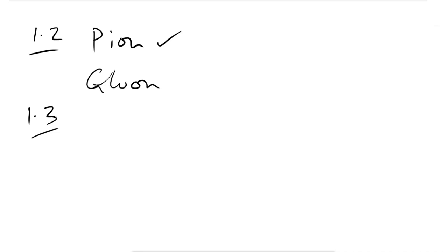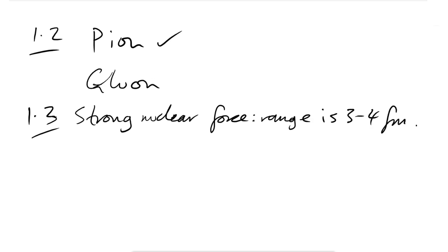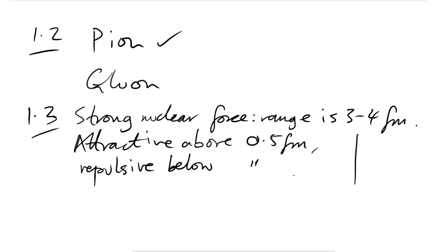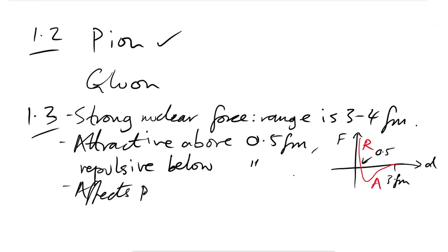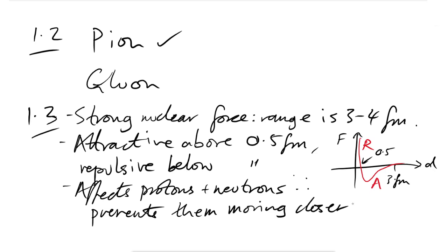Question 1.3: How does the variation of the strong nuclear force with distance contribute to stability of the nucleus? The range is 3 to 4 femtometres. It is attractive above 0.5 femtometres and repulsive below that. It affects both protons and neutrons — all nucleons — therefore preventing them from moving closer together or further apart.